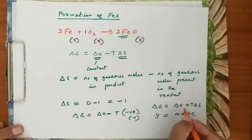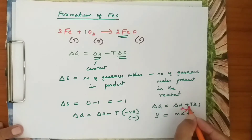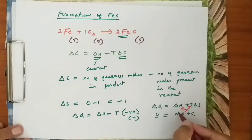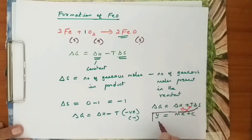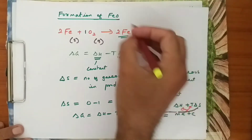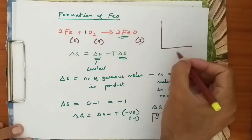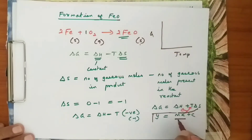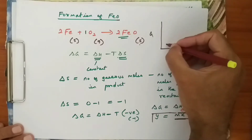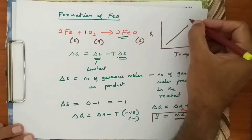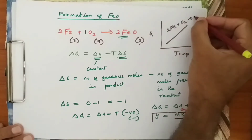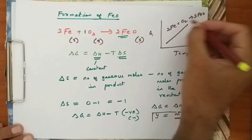Here c = ΔH, x = temperature, and m = ΔS. So we get a graph in the format y = mx + c, and the graph for the formation of FeO — that is 2Fe + O₂ → 2FeO — will have a positive slope.